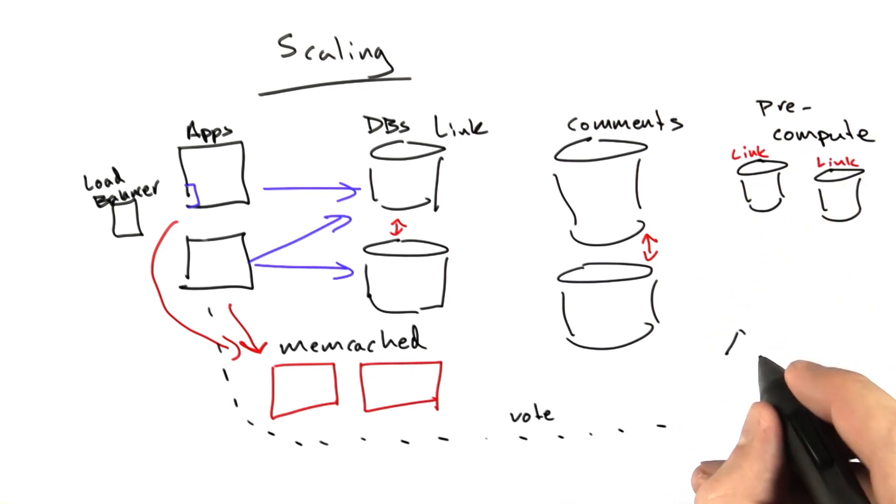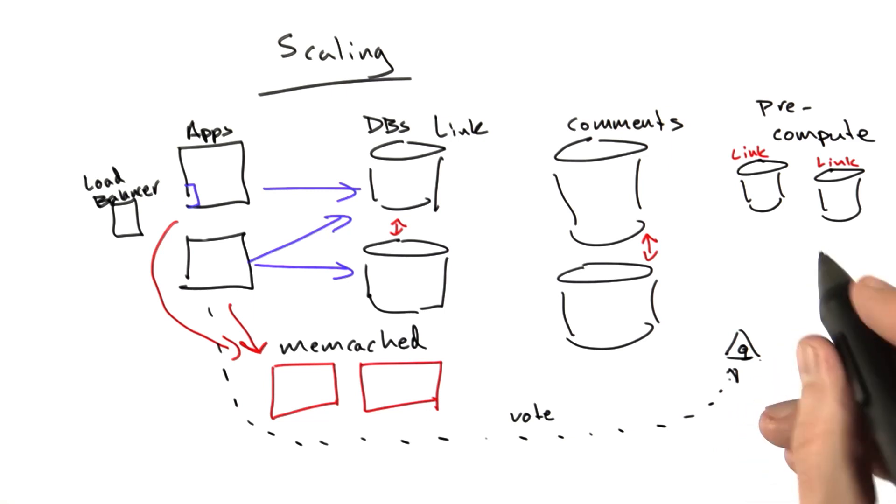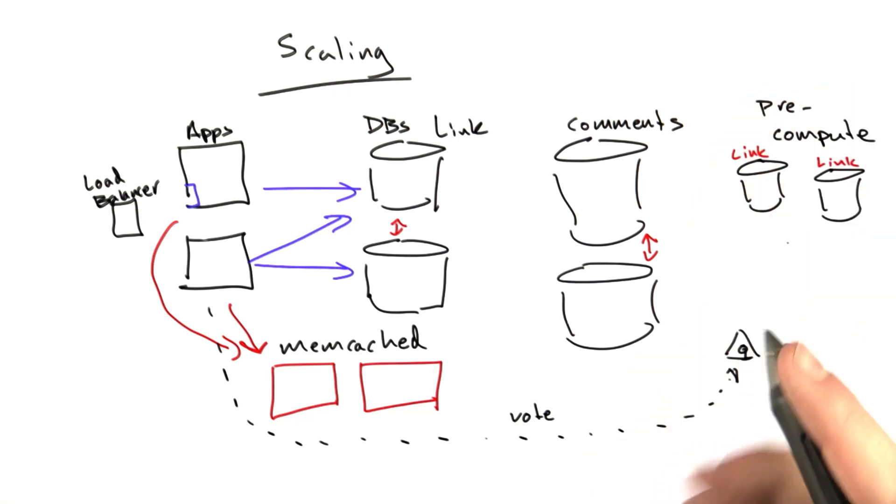Every time a vote would come in, we'd put it in this queue. A queue is just a list of things to be done. We'd have this machine that basically manages a huge list of things.